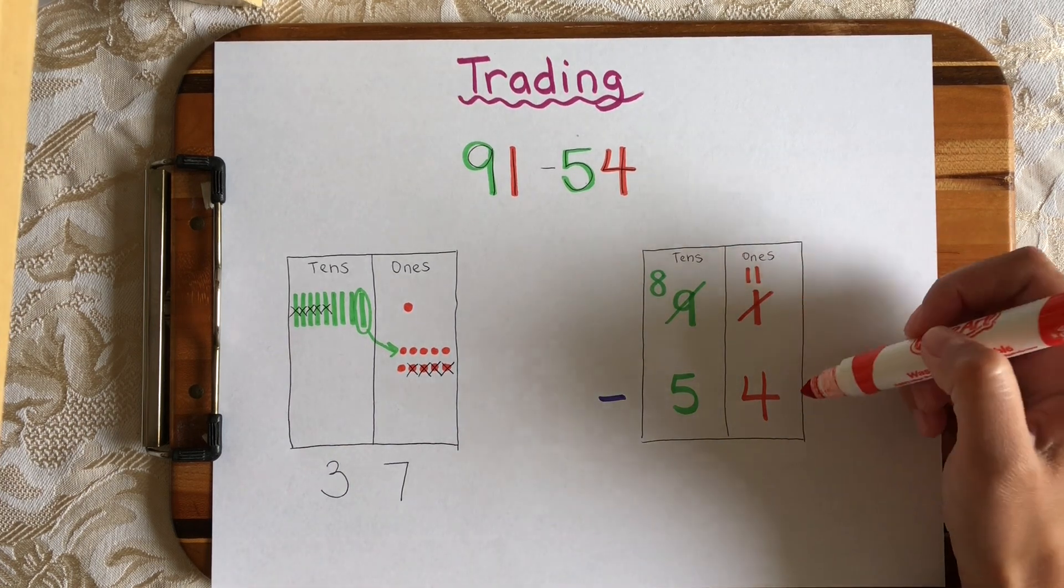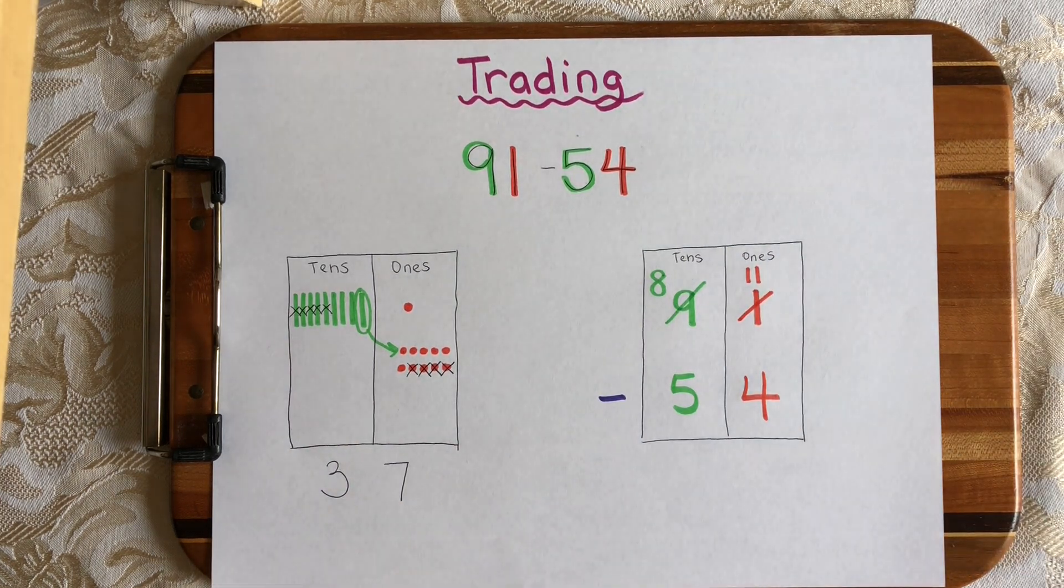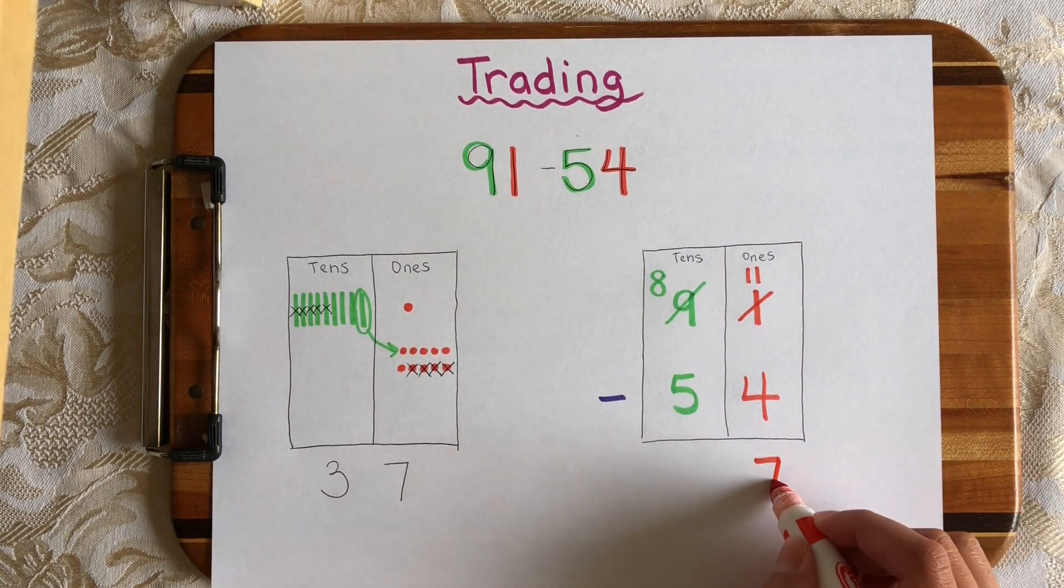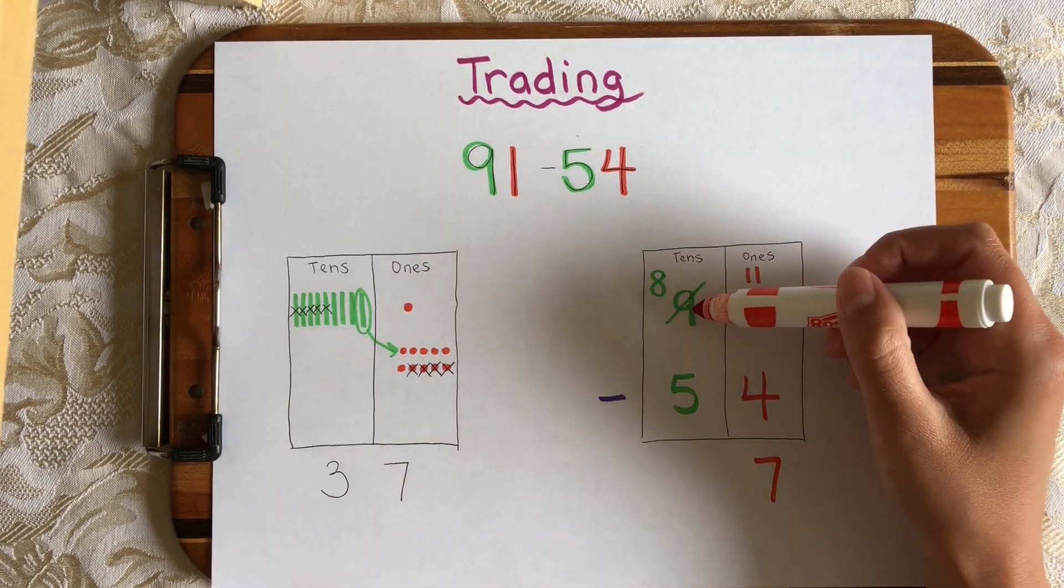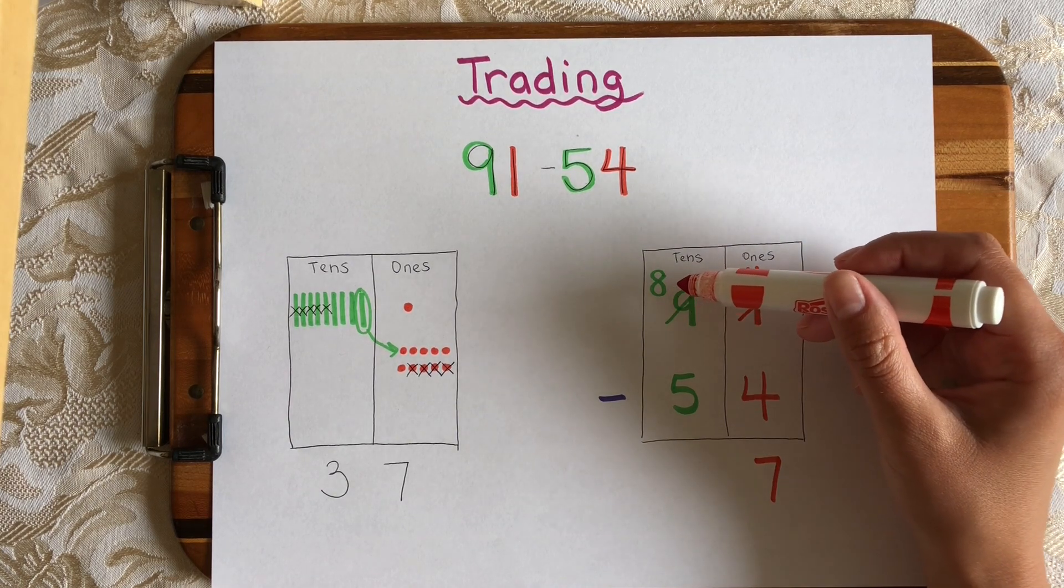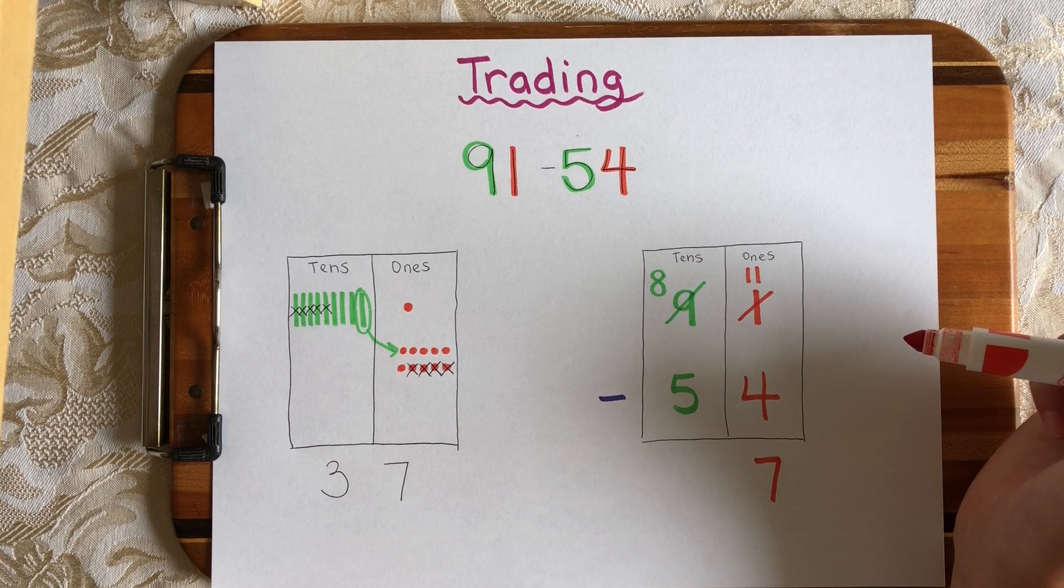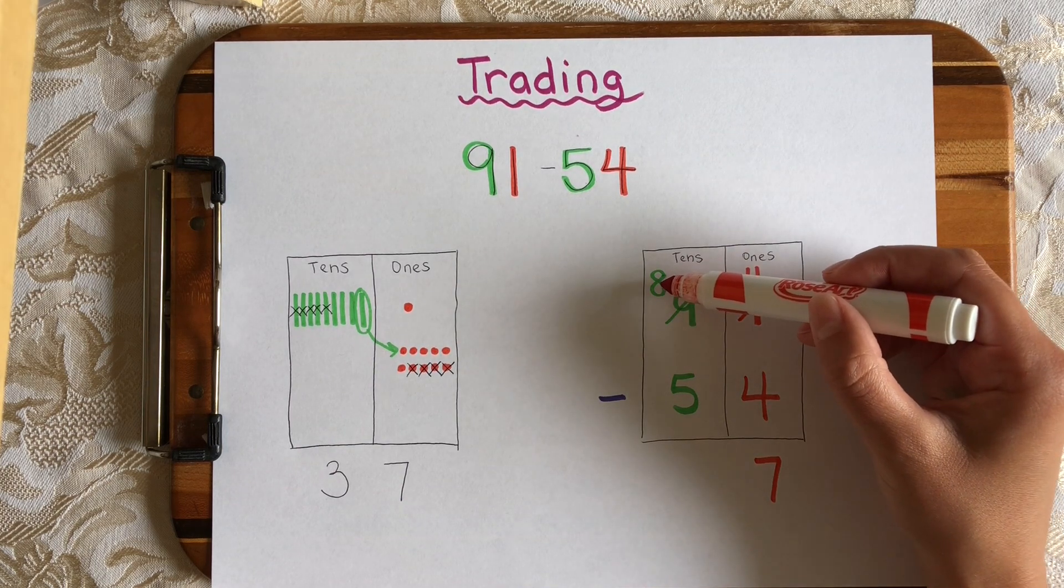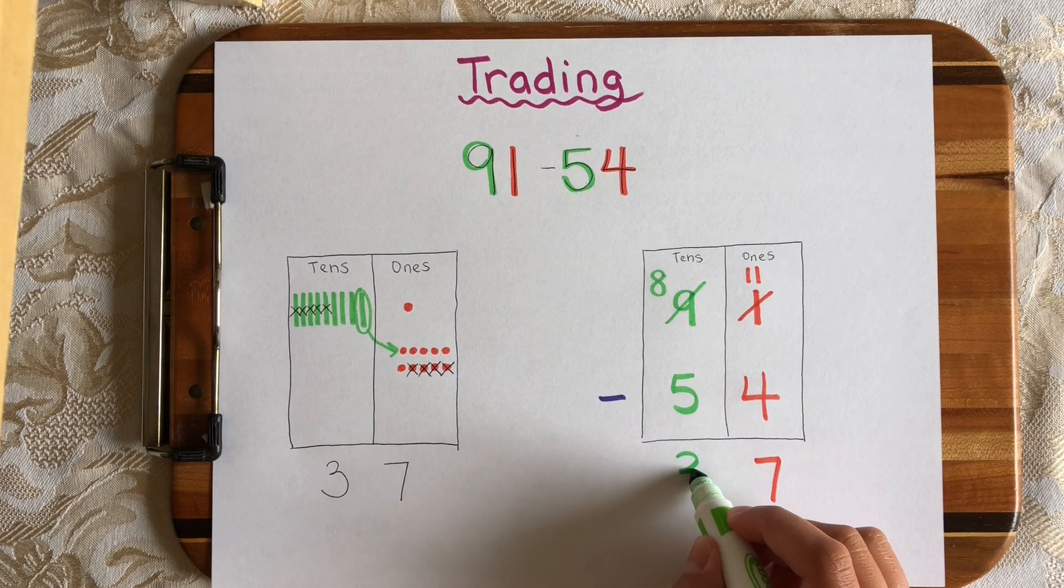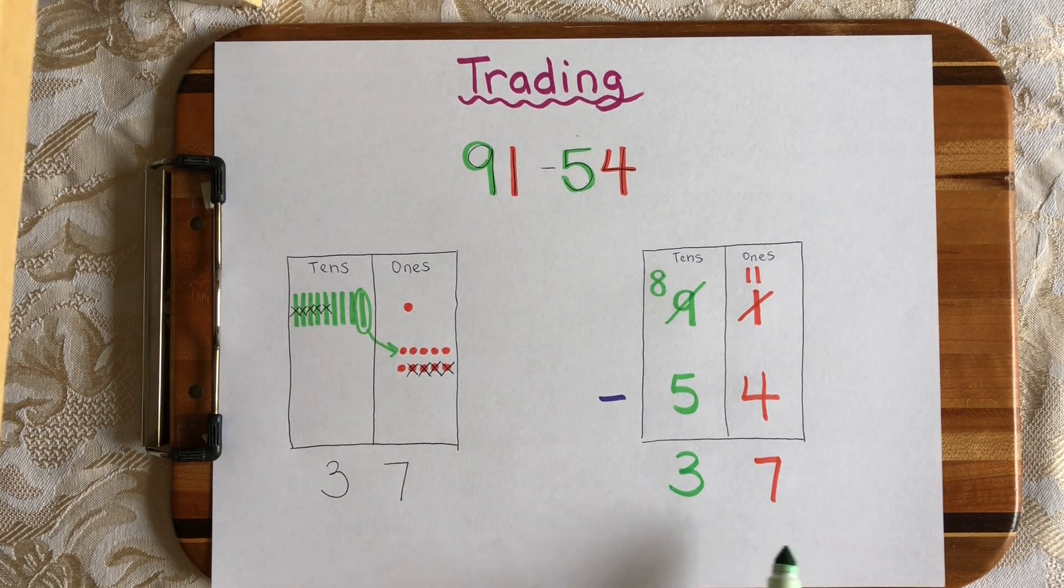Now I can do 11 minus 4. I have enough 1s to subtract. So 11 minus 4 is 7. And now over here I'm not doing 9 minus 5 anymore because remember we traded one of those 10s and gave it over to the 1s house. So now I'm doing 8 minus 5 which will get me to 3. 8 minus 5 is 3 and I got 37.